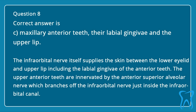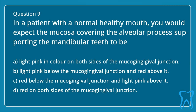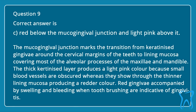Question 9. In a patient with a normal healthy mouth, you would expect the mucosa covering the alveolar process supporting the mandibular teeth to be: A. Light pink in color on both sides of the mucogingival junction. B. Light pink below the mucogingival junction and red above it. C. Red below the mucogingival junction and light pink above it. D. Red on both sides of the mucogingival junction. The correct answer is C: red below the mucogingival junction and light pink above it. The mucogingival junction marks the transition from keratinized gingivae around the cervical margins of the teeth to lining mucosa covering most of the alveolar processes. The thick keratinized layer produces a light pink color because small blood vessels are obscured, whereas they show through the thinner lining mucosa producing a redder color. Red gingivae accompanied by swelling and bleeding when tooth brushing are indicative of gingivitis.